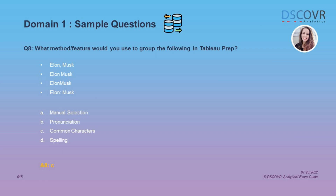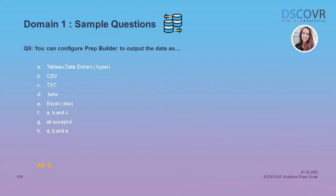This is a Tableau Prep Builder question where you may be given a list of names or states that use different punctuation, and you're asked to select a specific method to group these items together. You need to be familiar with these options and be able to choose the correct one in applicable use cases. You may also see questions related to different types of output files that can be created in the output step — you can configure Prep Builder to output your data as an extract, a CSV, or a Microsoft Excel file.